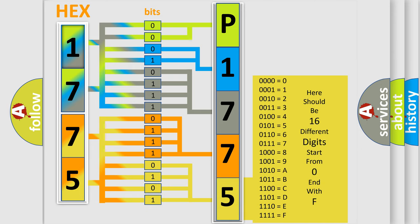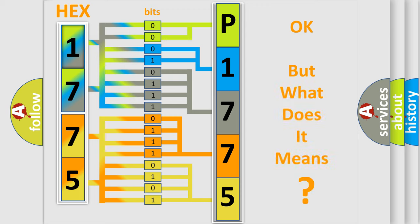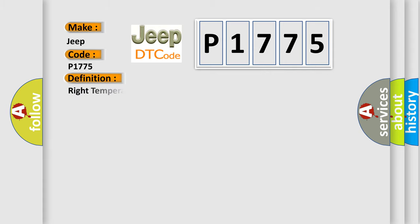We now know in what way the diagnostic tool translates the received information into a more comprehensible format. The number itself does not make sense to us if we cannot assign information about what it actually expresses. So, what does the diagnostic trouble code P1775 interpret specifically for Jeep car manufacturers? The basic definition is: Right temperature door control circuit short to battery.